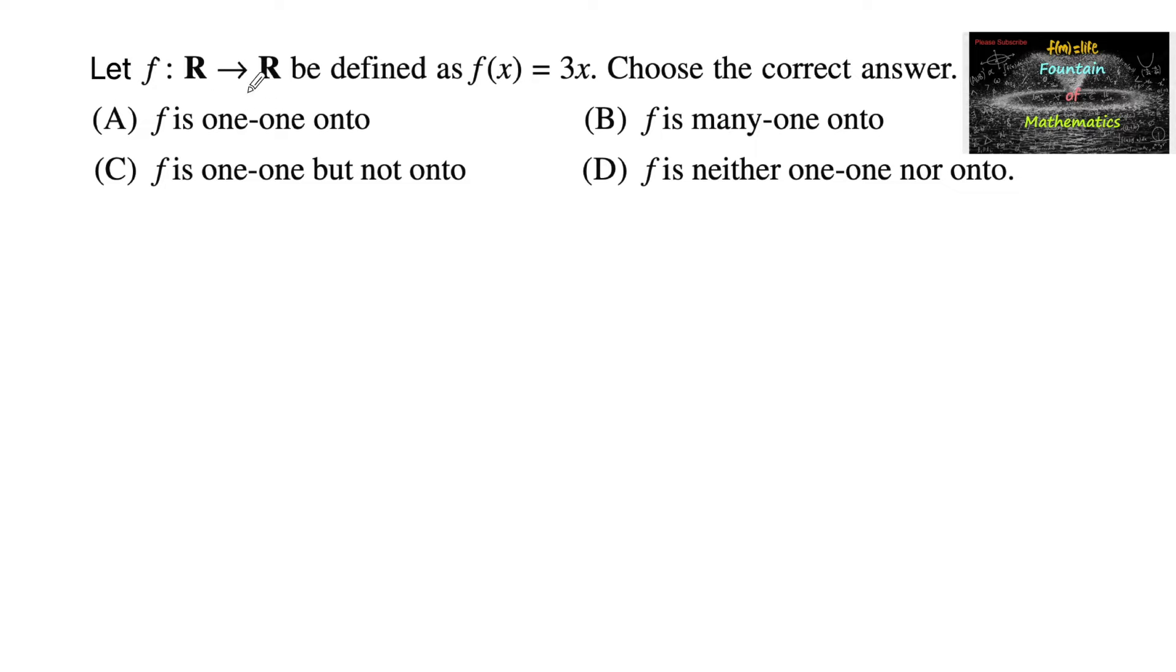Let f from R to R be defined as f(x) equals 3x. Then choose the correct answer. So given f(x) equals 3x, and if you can see the graph of 3x, that is y equals 3x.